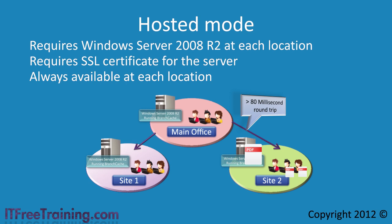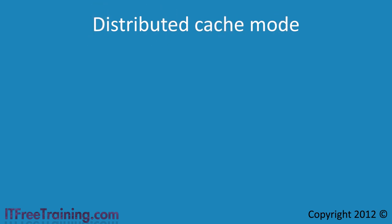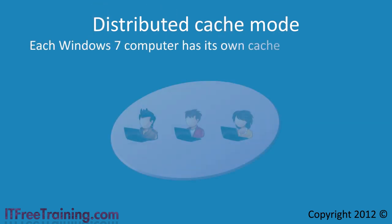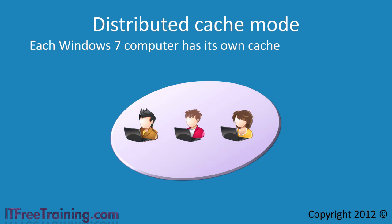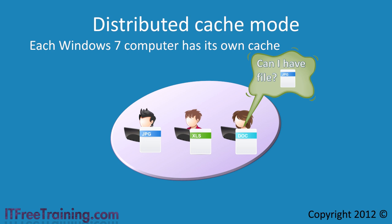If you don't have Windows Server 2008 R2 at each branch office, you may use the second mode called distributed cache mode. In this mode, each Windows 7 computer has its own cache. When a file is copied over the network, it is stored on the local cache. If another Windows 7 computer wants the file, it will send a broadcast on the network asking the other computers if one of them has it. If one of the computers does, the file will be transferred from that computer rather than using the wide area network.